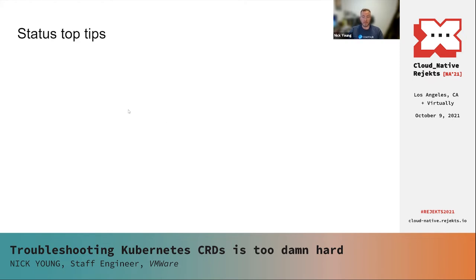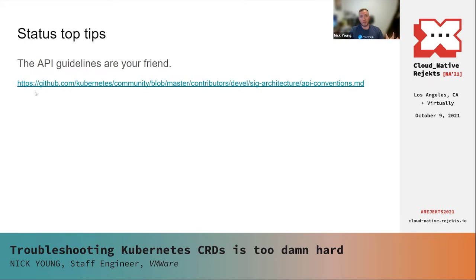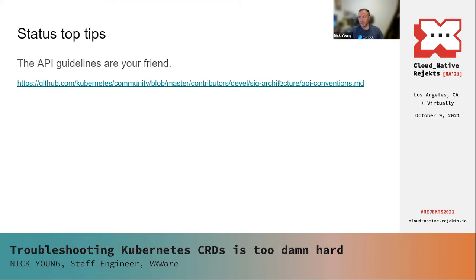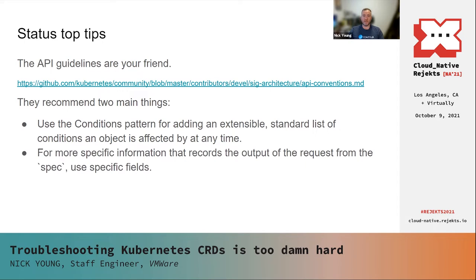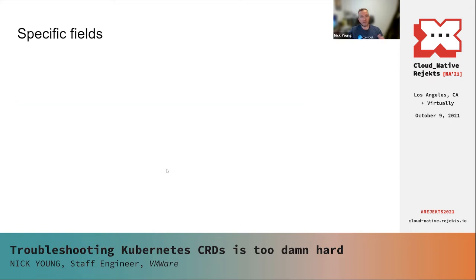Let's go over some top tips based on my own experience working with CRDs. The API guidelines are your friend. These are the API guidelines for core API objects but they're applicable to CRDs as well. The important document is in the Kubernetes community repo under SIG Architecture — it's the API conventions document. It makes two big statements about status: use the conditions pattern for an extensible, standard list of conditions an object is affected by; and for more specific information that records the output of the request from the spec, use specific fields.